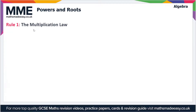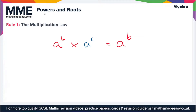Starting with the multiplication law. This applies when you have a variable to a power — for instance a to the b — and you're multiplying this by the same variable to a different power, for instance a to the c. This is going to be equal to a to the power b plus c. So when you have the same variable with different powers multiplied together, you add the powers. This is the multiplication law.